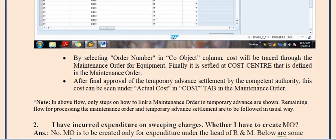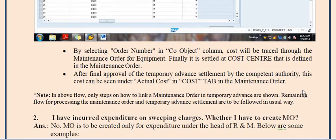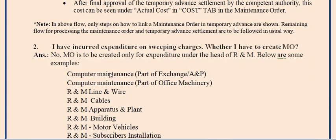By selecting order number in the cost object column, cost will be traced through the maintenance order for equipment, and finally it is settled at the cost center defined in the maintenance order. After final approval of the temporary advance settlement by the competent authority, this cost can be seen under actual cost in the cost tab of the maintenance order using transaction IW33.